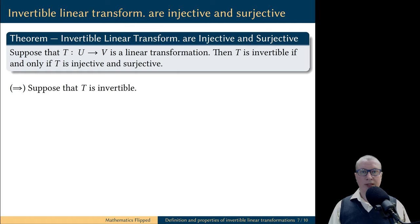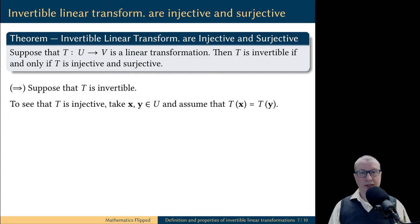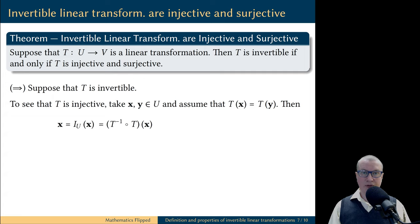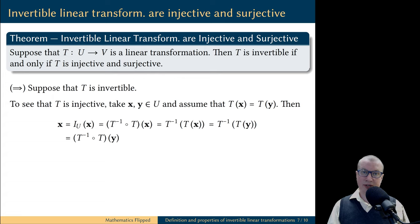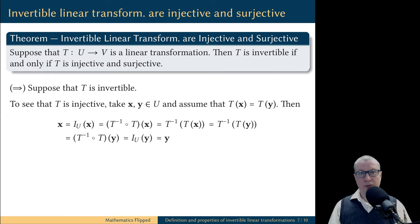In the forward direction, let's assume that the linear transformation is invertible, and we need to prove that it is injective and surjective. To show that it is injective, let's take two vectors x and y in the domain, and assume that t of x and t of y are equal. Then vector x can be represented as the value of the identity transformation on x, which is the same as t inverse composed with t on x. This is t inverse of t of x, and we assumed t of x equals t of y. Unraveling in the opposite direction, this is the value of the composition on y, and the composition is the identity transformation. Therefore, this equals y. This proves: if t of x equals t of y, then x equals y — exactly what it means for t to be injective.